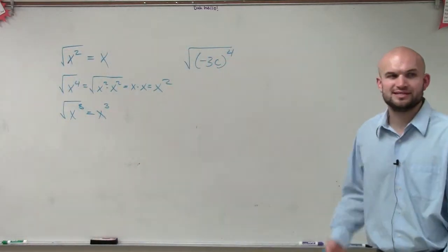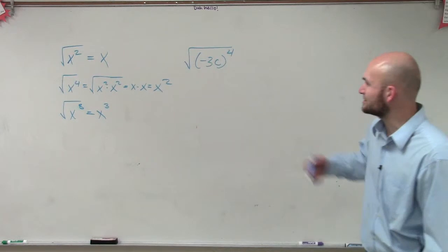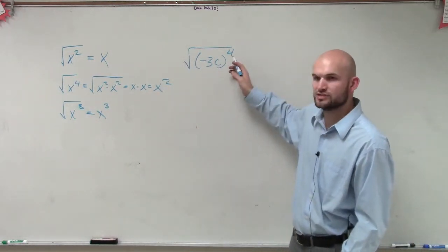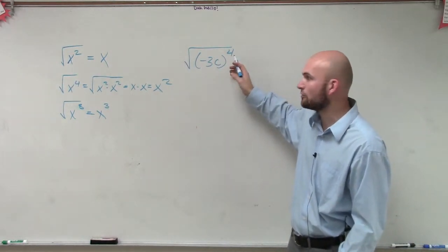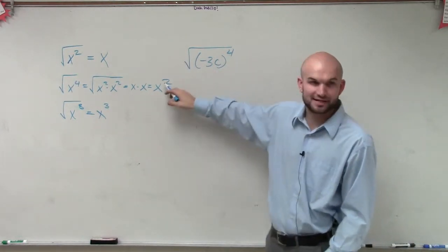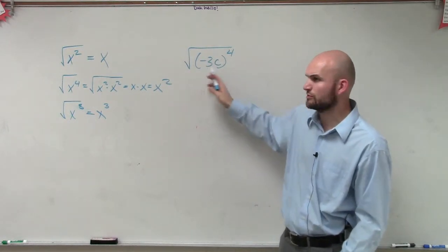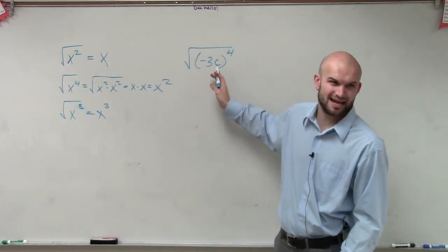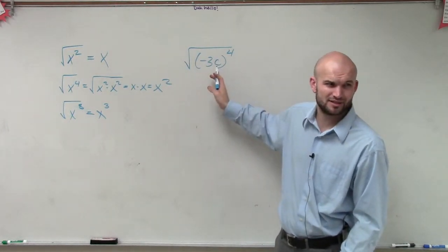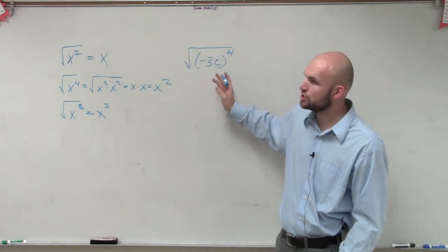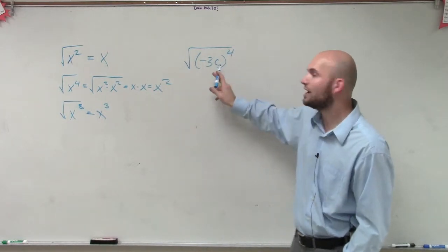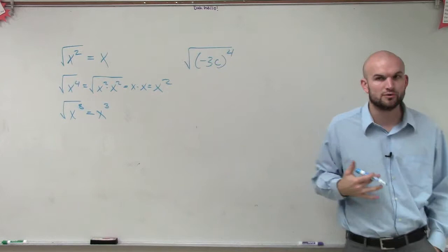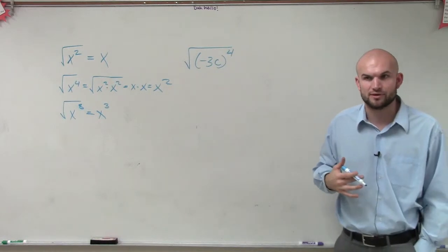One thing I want you to understand — let's go back to this, because we know we're taking the square root of something to the 4th power, so we know our answer is going to be squared. But how are we going to take the square root of even a negative number? Because can we take the square root of negative numbers? No.